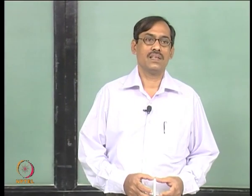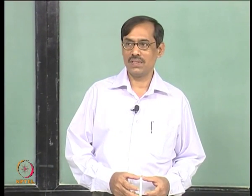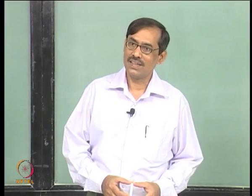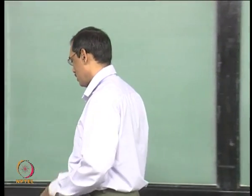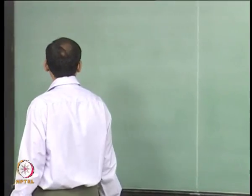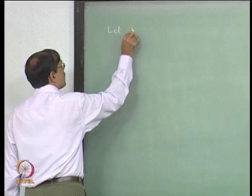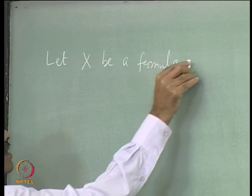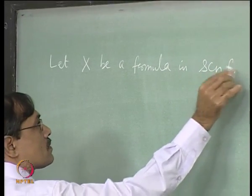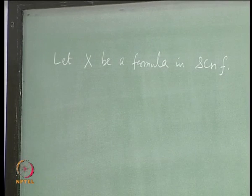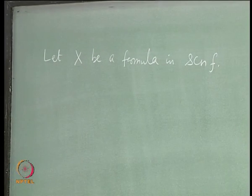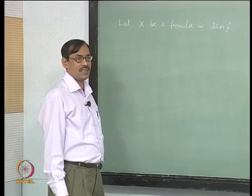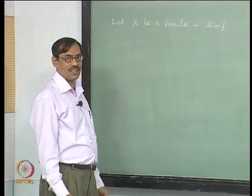For that we need the Herbrand domain or the Herbrand universe, then that generates the Herbrand interpretations, then the Herbrand expansions. We started with a formula in SCNF. Let X be a formula in SCNF. Any formula can be converted to an SCNF preserving satisfiability, so there is no harm in starting from the SCNF formula itself, if satisfiability is all that we are concerned with.